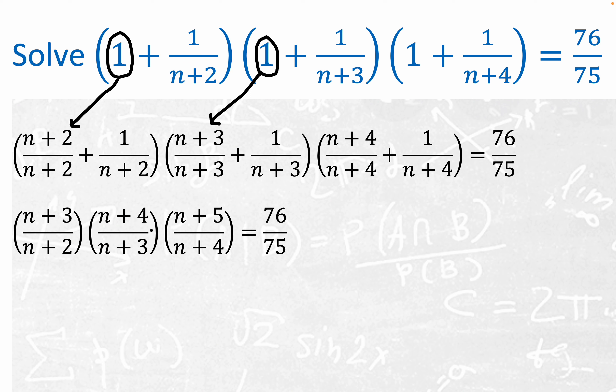You see n plus 3 plus 1 is n plus 4. Now you still might think, what's going on here? This doesn't look very favorable, but at least we have a product, and the thing that's very useful right here is that we have a lot of common factors canceling.